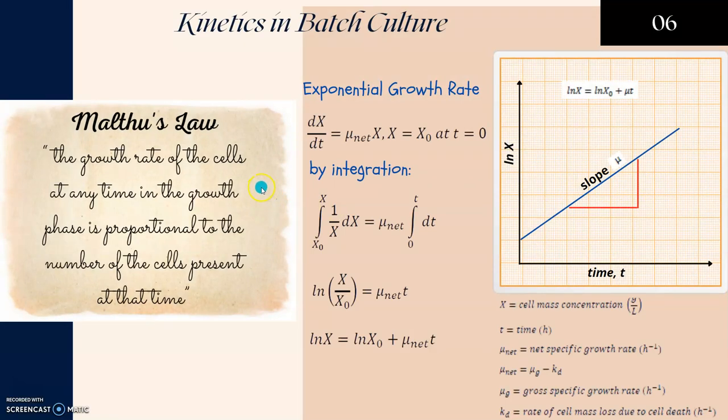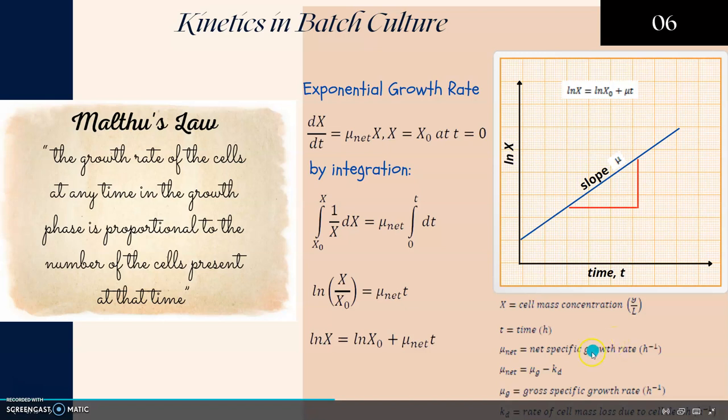The kinetics in batch culture is described by Malthus' law. The growth rate of the cells at any time in the growth phase is proportional to the number of cells present at that time. It is represented by this equation where dx/dt equals μ_net times x, where x is the initial biomass at t equals 0.